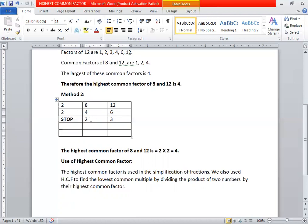So I have taken 2 in the first step: 2, 4 for 8 and 2, 6 for 12. Then again 2 to the 4, 2, 3. Stop here because we cannot further divide these two numbers; there is no common factor in these two numbers, or we can say in other words, these two numbers are mutually prime.